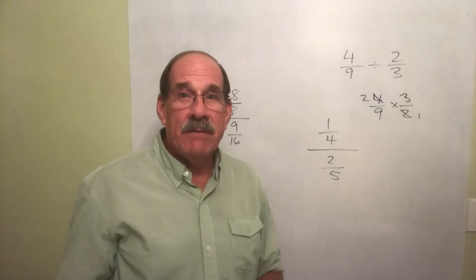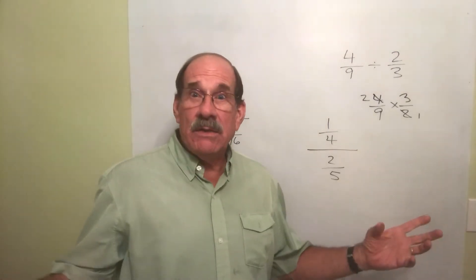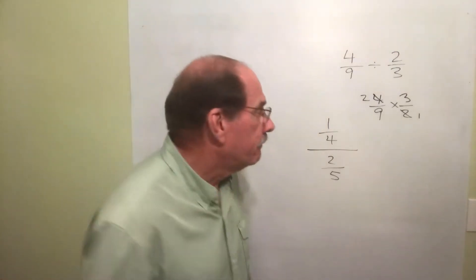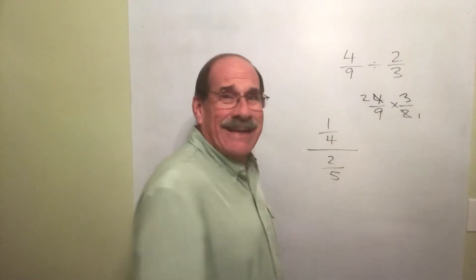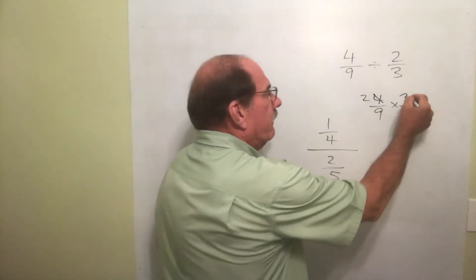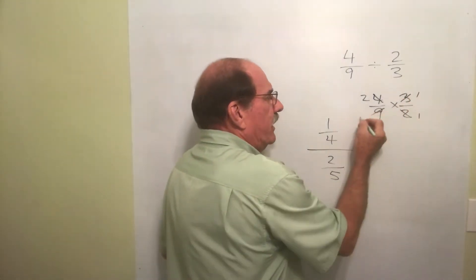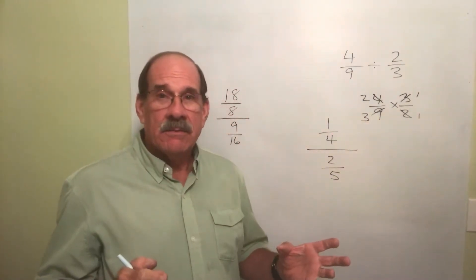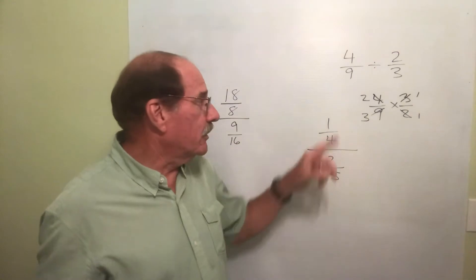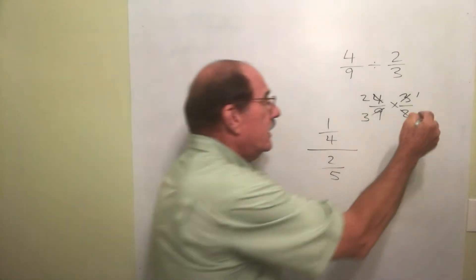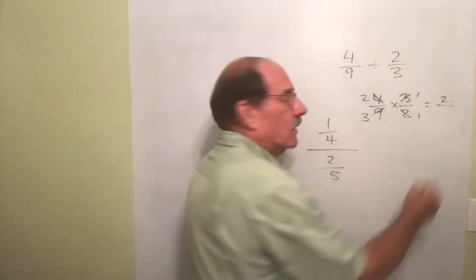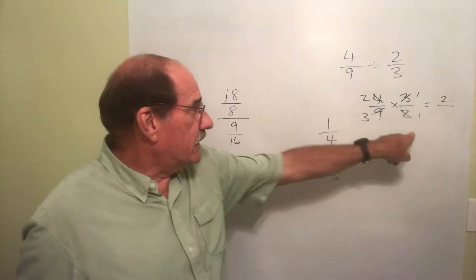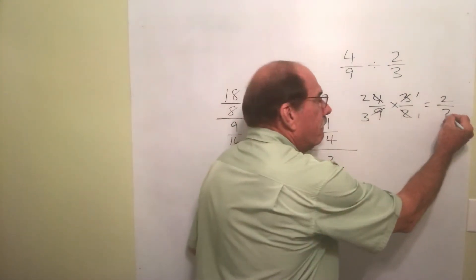Can three and nine divide by the same number? Absolutely positively. By three. Divide that by three. That's one. Divide this by three. That's three. Now that we've done that, you multiply the two top numbers. Two times one is two. Three times one is three.